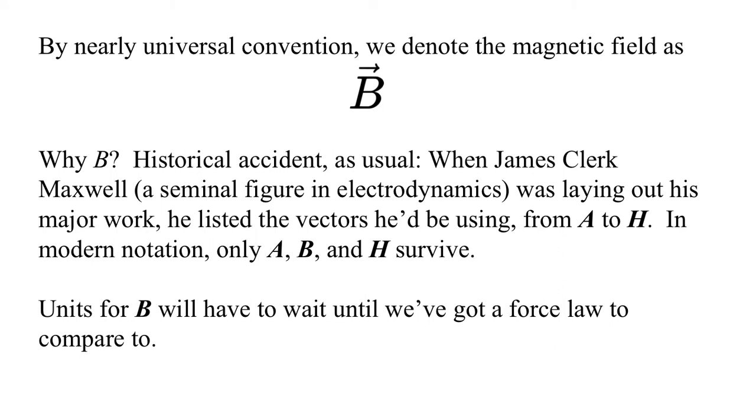When James Clerk Maxwell, a seminal figure in electrodynamics, was laying out his major work, he listed the vectors he'd be using, starting from A and going A, B, C, and so on, all the way to H. But in modern notation, only the A, B, and H survive. We don't use his C or his D, really, or anything like that. The units for B will have to wait until we've got some force law to compare to.